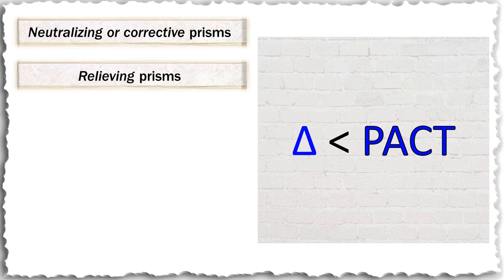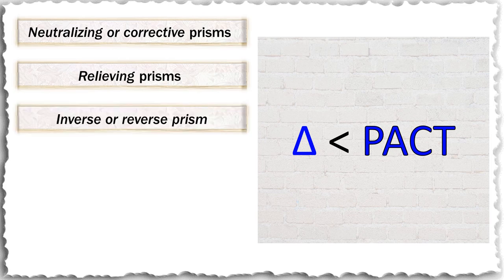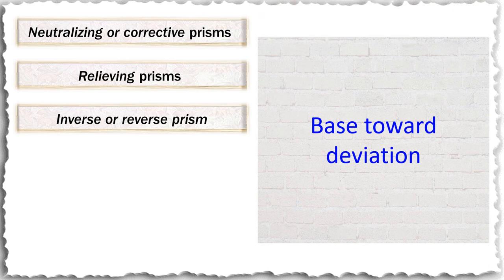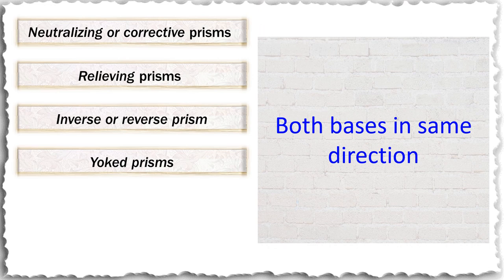The relieving prism relieves some of the burden yet allows some vergences to take place; it is the most commonly prescribed prism for binocular vision disorders. Inverse or reverse prisms are oriented with the base toward the direction of the deviation, unlike relieving prisms; they increase fusional demand and most commonly are used in orthoptic exercises to increase fusional vergences. They may also be used in eyes with poor vision to improve cosmesis, as described earlier. Yoked prisms are a pair of prisms in front of both eyes with both bases in the same direction, commonly used in incomitant strabismus including A-V patterns, abnormal head posture, nystagmus, and homonymous hemianopia.